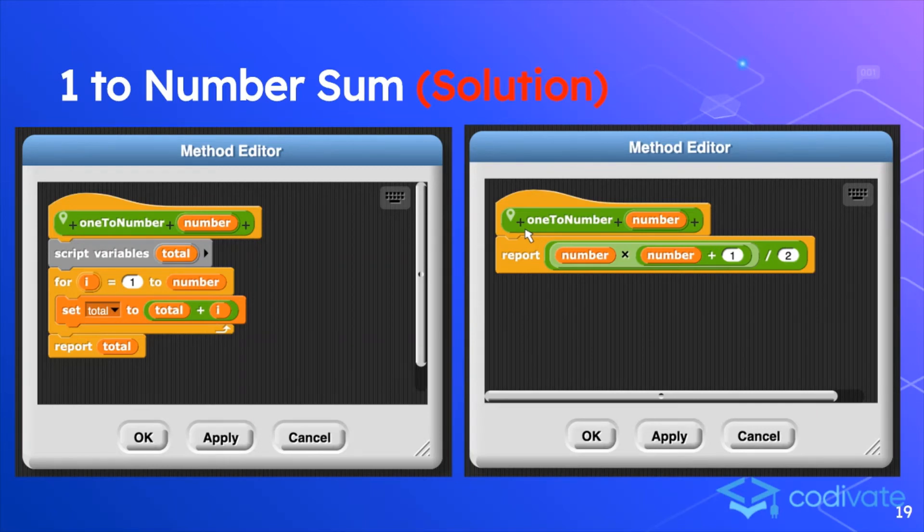Another way to do this is by using the second solution. The second solution reports a block, which is number plus 1 times the number itself divided by 2. That is a simpler way of doing the same thing we saw in the first solution.